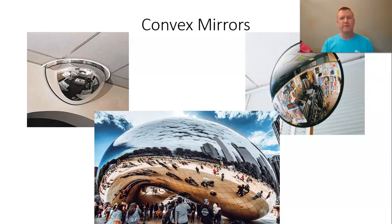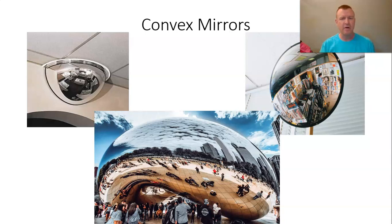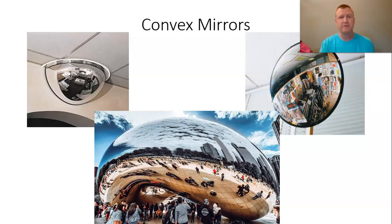One thing is all the images are upright. If you remember the images in the spoon, one was upright and one was upside down. All these images are upright and they're all small — these images look pretty small compared to how big the object is. This is what's going to happen with convex mirrors. Let's take a look why.